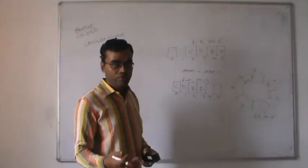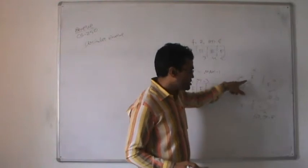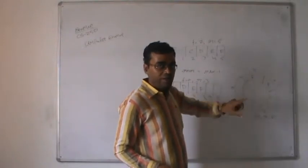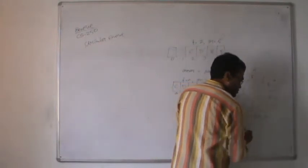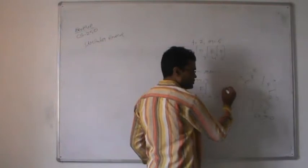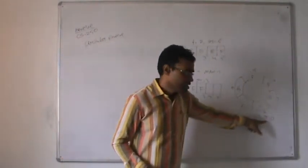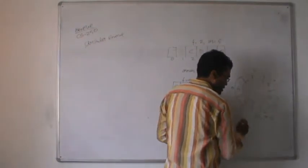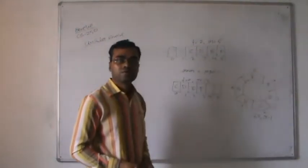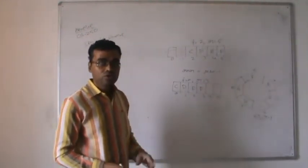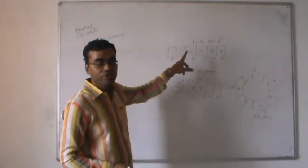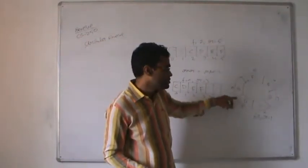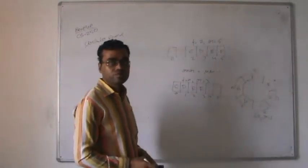In the circular queue, if rear is at five and we insert a new element, rear shifts from five to zero. So if rear equals MAX minus one and we try to insert a new element, at that time rear will become zero. We link the last element of the queue to the first element. So now rear is one and front is two. This is the modification in the circular queue - we can represent the circular queue like this.